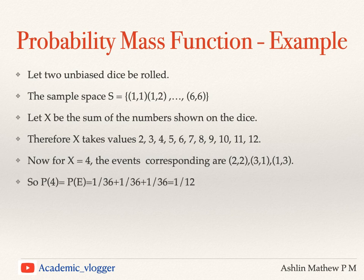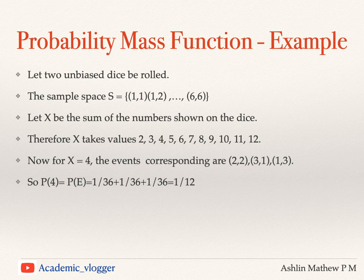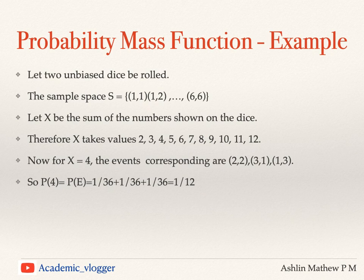So if we consider the probability of X = 4, the corresponding events each have probability 1/36: getting (2,2) is 1/36, getting (3,1) is 1/36, and getting (1,3) is 1/36. So getting the value X = 4 has probability 3/36 = 1/12. Similarly, the probability of X = 2 will be from only one case, which is (1,1), giving probability 1/36.